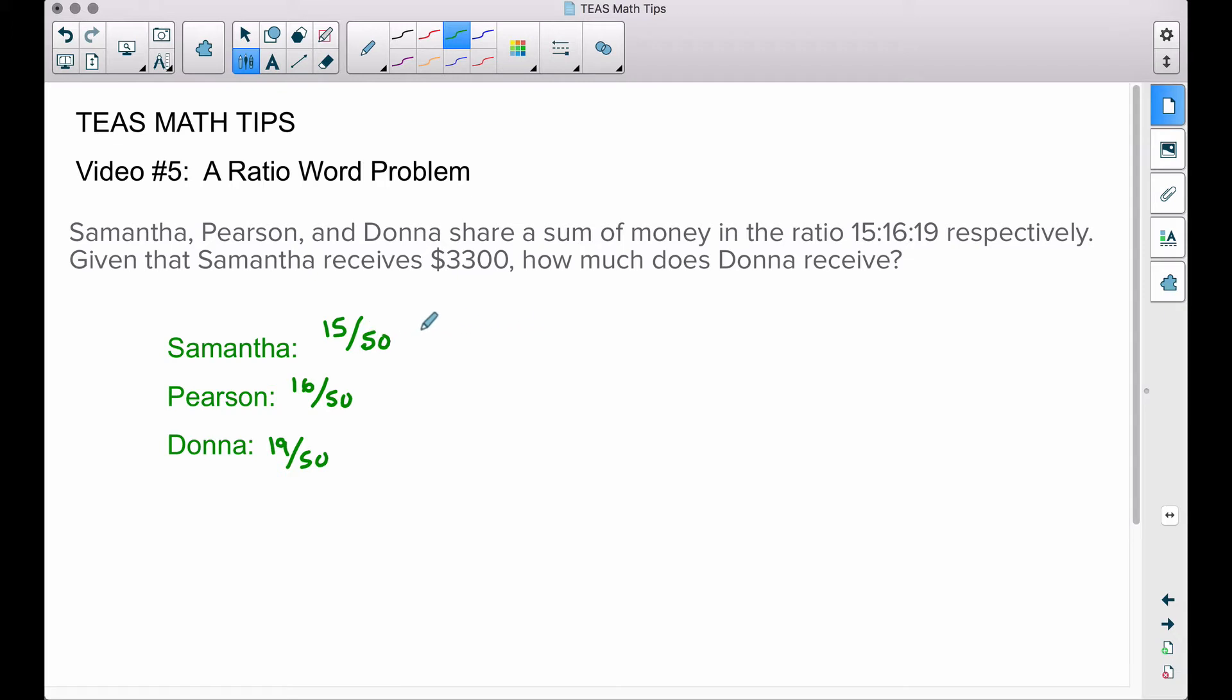Well, if we take 15 and divide by 50, that's going to give us 0.3, which actually corresponds to 30 percent. These are actually some rather nice percentages or decimals that we get here. 16 divided by 50 is going to be 0.32, which is 32 percent.